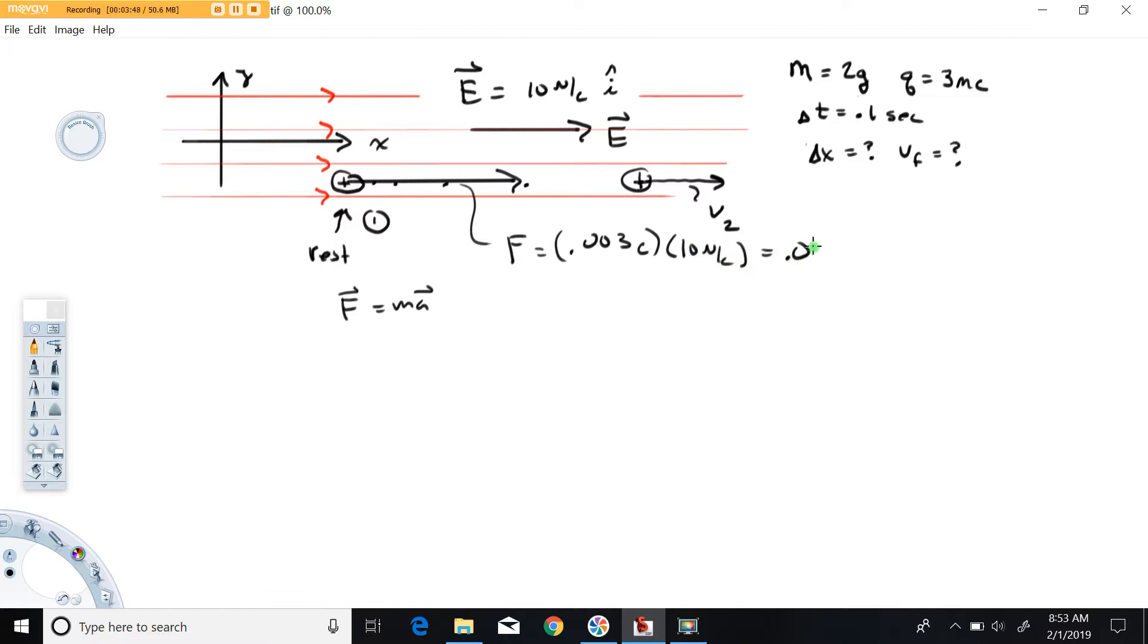Now we apply Newton's second law: sum of all forces equals ma. Might as well just call right positive. There's only one force here, the 0.03 newtons equals the mass of this particle, 0.002 kilograms.